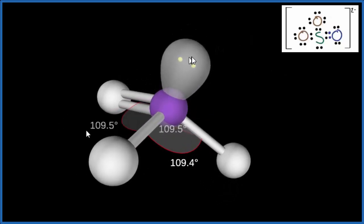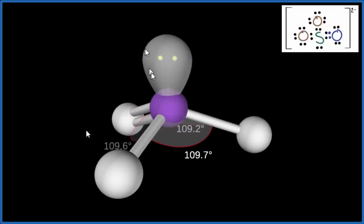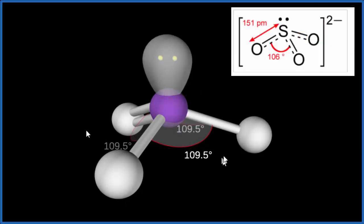it pushes these down. And you can see, it occupies more space than these hydrogen atoms here, so it ends up pushing those closer. So instead of 109.5, we get about 106.0 is our bond angle in the SO3 2- ion.